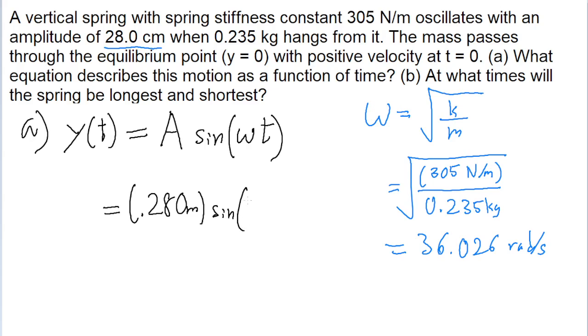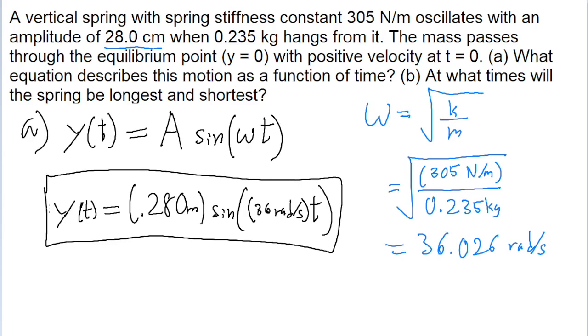and then it's about 36 radians per second. So 36 radians per second multiplied by time. And this is our formula for the y position of the motion.